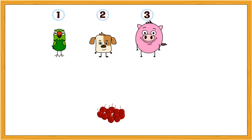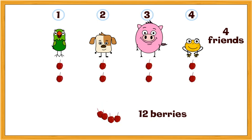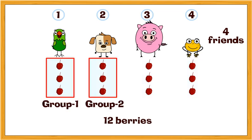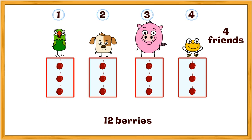Do you remember when Tota was sharing berries? She could have placed them like this. Can you see how the 12 berries are divided into groups of 4? How many groups of 4 are there? 3 groups.